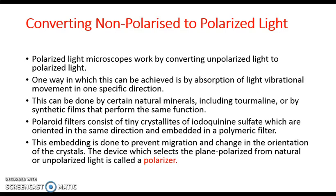A polarized light microscope works by converting unpolarized light to polarized light. One way this can be achieved is by absorption of light vibrational movement in one specific direction. This can be done using certain natural minerals including tourmaline, or by synthetic films that perform the same function. Polaroid filters are used to convert those movements in one direction, and they consist of tiny crystallites of iodoquinine sulphate oriented in the same direction and embedded in a polymeric filter to prevent migration and change in orientation of the crystals.